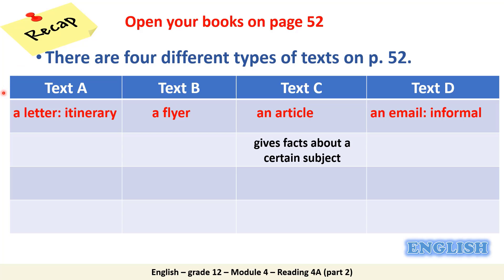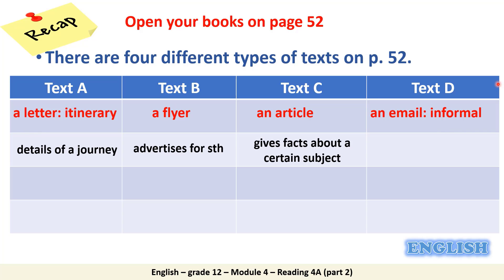Which of the texts advertises for something? It is the flyer. Flyers advertise for products and services. Which of the texts has details of a journey? It is the letter, the itinerary. And which of the four texts is written to a friend? It is the email, the informal email, text G.